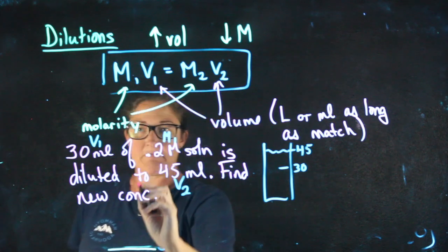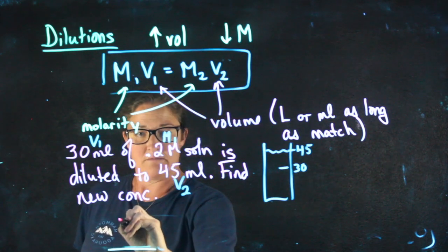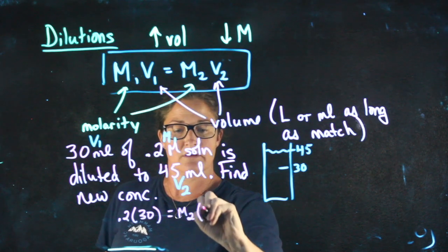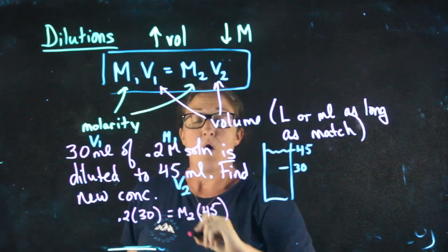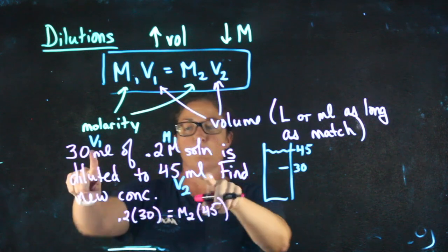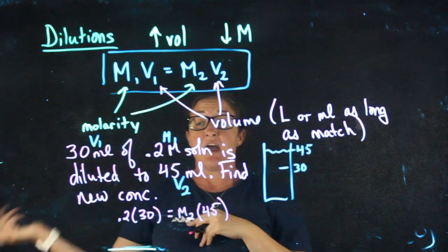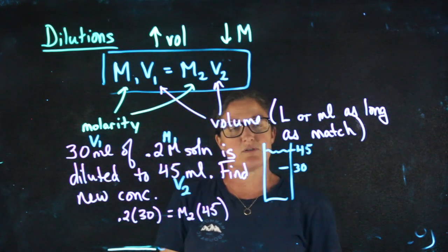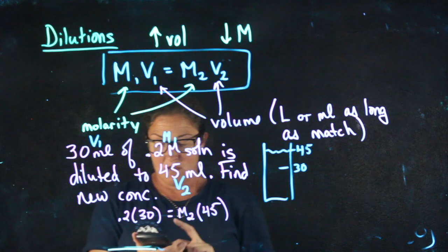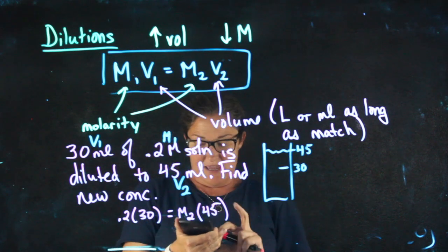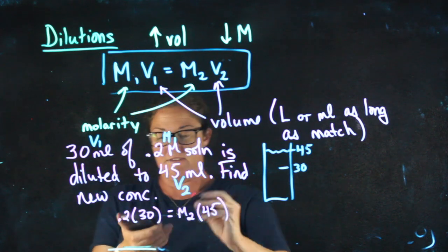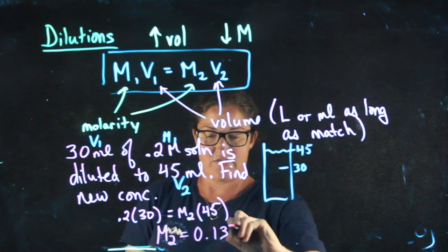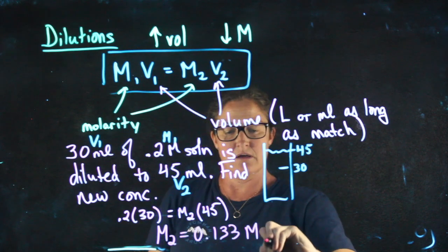Plugging these into my formula, M1V1 equals M2V2. One thing I did take a second to check was to make sure that both volumes were in the same units. If one of them was liters and one of them was milliliters, I'd need to make sure to convert them so that they were in the same units. So 0.2 times 30 divided by 45 gives me my M2 as 0.133 molar.